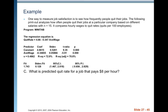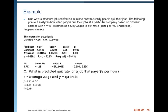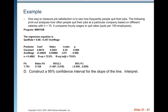What is the predicted quit rate for a job that pays $8 per hour? You simply plug in 8 as the average wage. X is the average wage and Y is quit rate, so y-hat equals 4.86 minus 0.347 times 8, which gives y-hat equals 2.084.